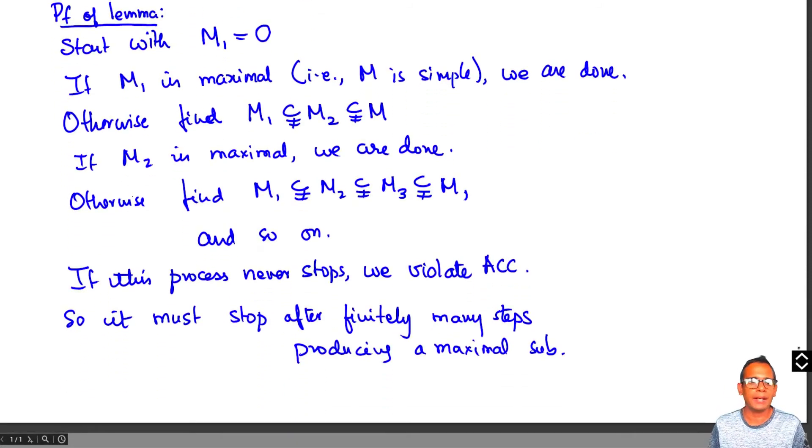So this is how we prove that every module which satisfies the ascending chain condition has a maximal proper submodule.